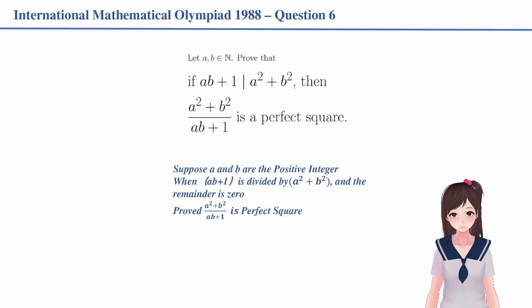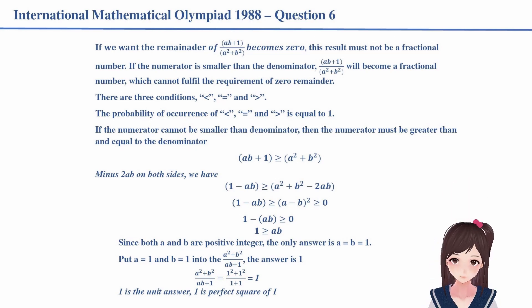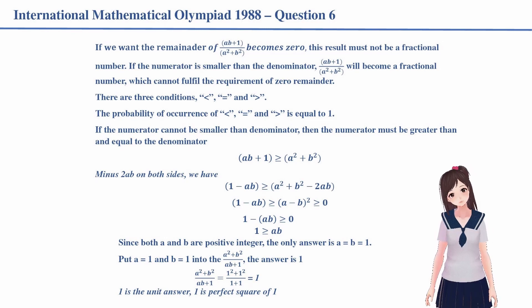Let us take a look at this calculation. If we want AB + 1 divisible by A² + B², the result must not be a fractional number. If so, the numerator must be greater or equal to the denominator. Then we have AB + 1 ≥ A² + B². Minus 2AB on both sides, the left becomes 1 - AB.